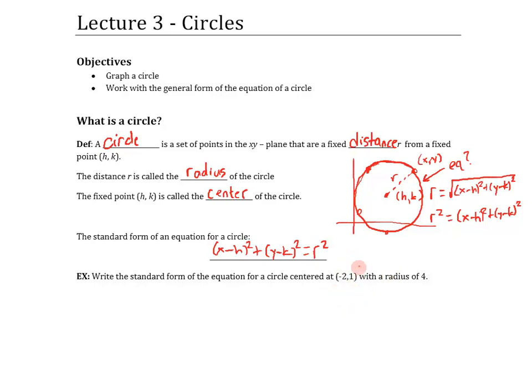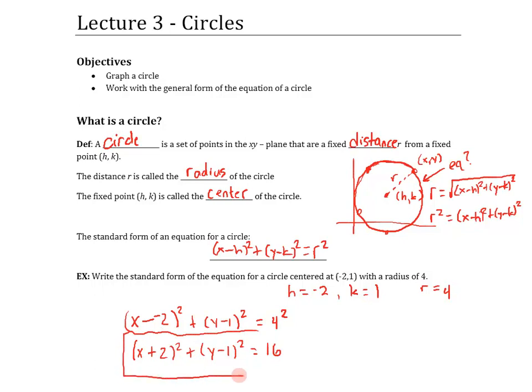If you are given a center and a radius, we can use that and just plug those numbers straight in. In this case, since we have center (-2, 1), h is -2, k would be 1, and the radius is 4. If we plug all of those into the standard form, what I end up with is (x - (-2))² + (y - 1)² = 4². We'll simplify this: (x + 2)² + (y - 1)² = 16. That right there is the equation of the circle described in that example.